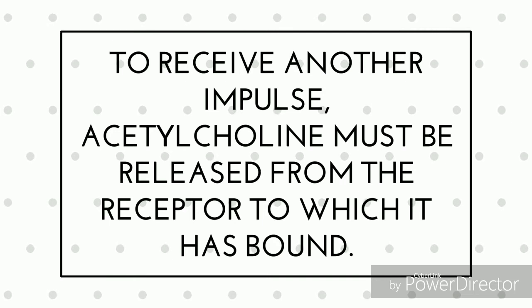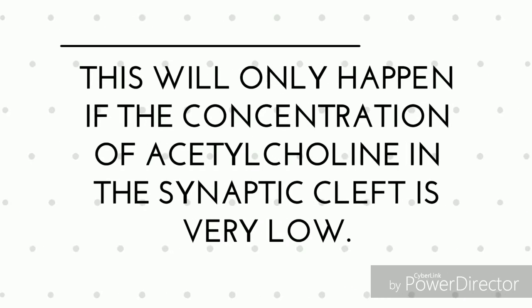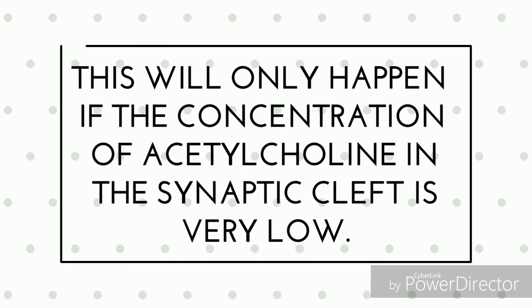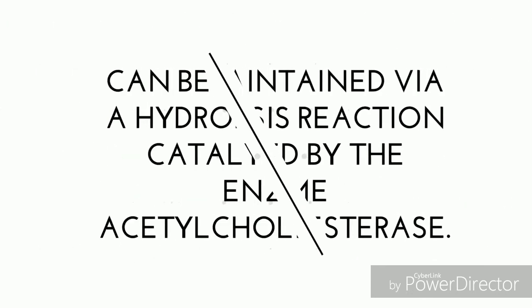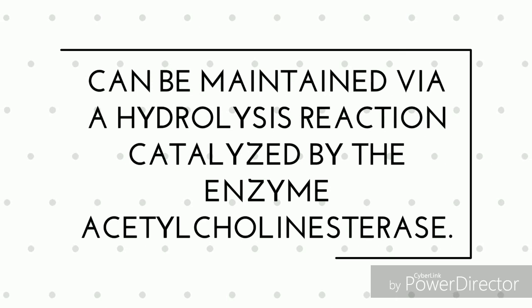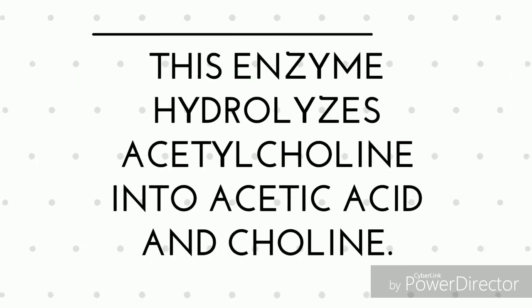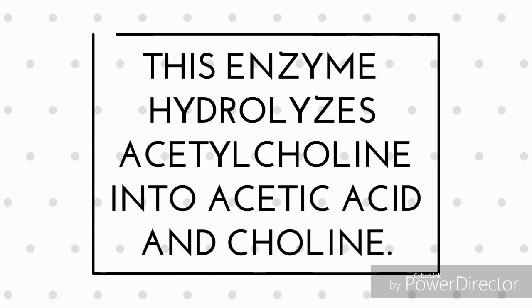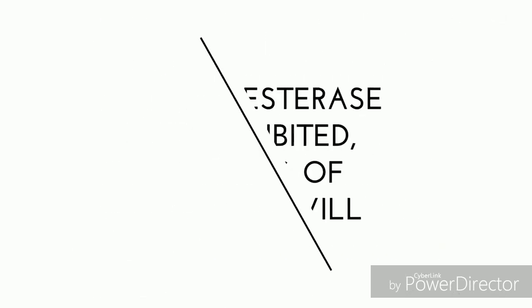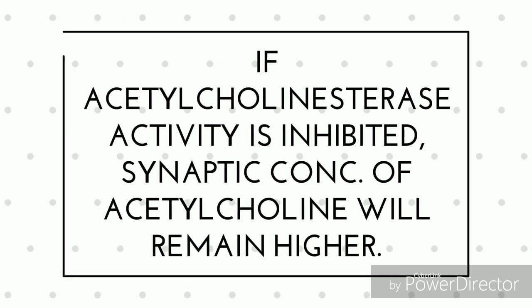For a cholinergic neuron to receive another impulse, acetylcholine must be released from the receptor to which it has bound. This will only happen if the concentration of acetylcholine in the synaptic cleft is very low. Low synaptic concentrations of acetylcholine can be maintained via a hydrolysis reaction catalyzed by the enzyme acetylcholinesterase, which hydrolyzes acetylcholine into acetic acid and choline. If acetylcholinesterase activity is inhibited, the synaptic concentration of acetylcholine will remain higher than normal.